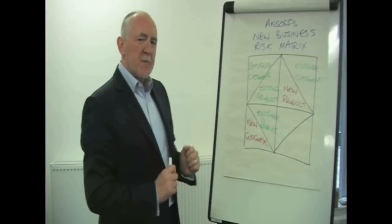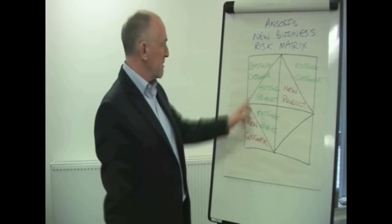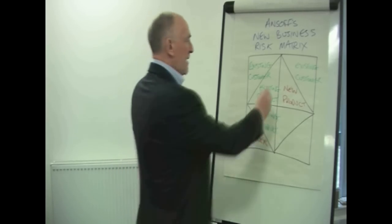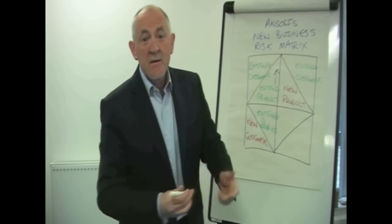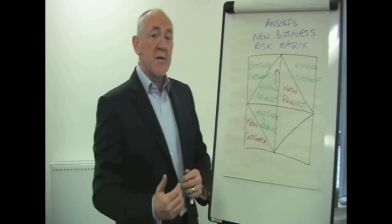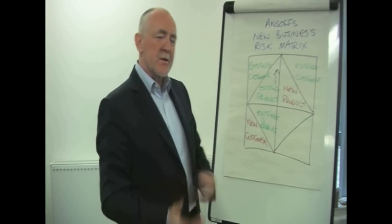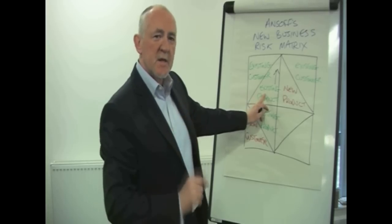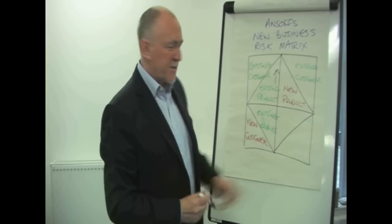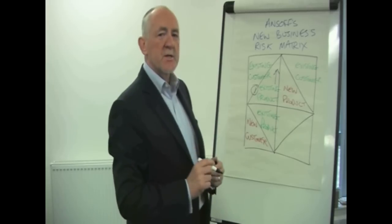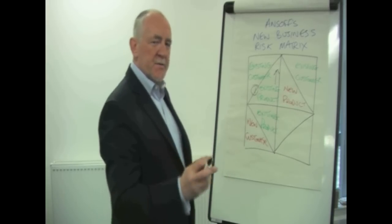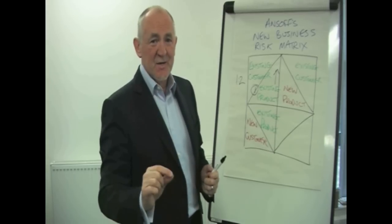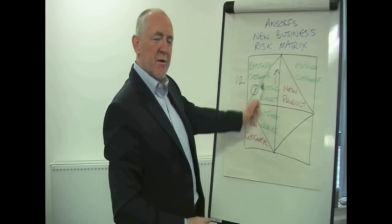What Ansoff says is that there are four types of new business, and not everyone sees it like this. The first is existing customers who buy existing products from us. For example, last year someone bought 10 units from us, and this year they're going to buy the same 10 units again. It's new business — you didn't have it before. Box number one, the easiest type of new business, still carries a risk, and it's almost binary: you have a one in two chance of winning it. You'll either win the extra 10 units or you won't.